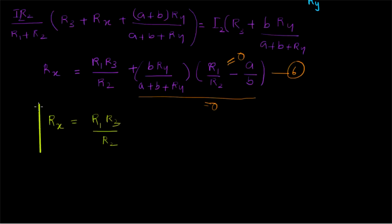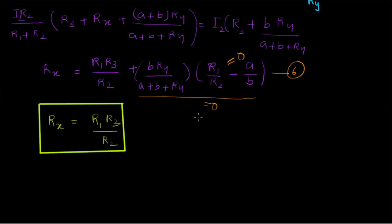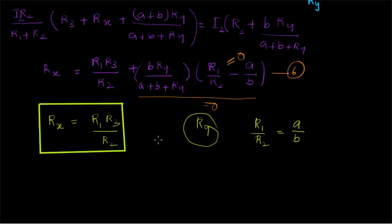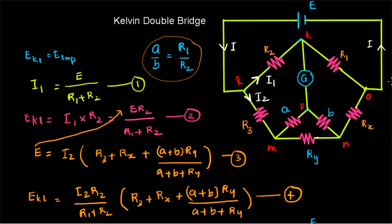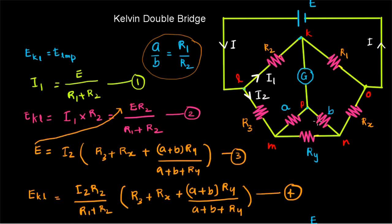This equation says that the unknown resistance RX is given by the ratio R1 R3 divided by R2. This is the usual working equation for the Kelvin double bridge. It indicates that the resistance of the yoke, RY, does not have any effect on the measurement of resistance provided that R1/R2 equals A/B. If you maintain this ratio, the unknown resistance equation contains no RY term, meaning the yoke resistance has no effect on the result.